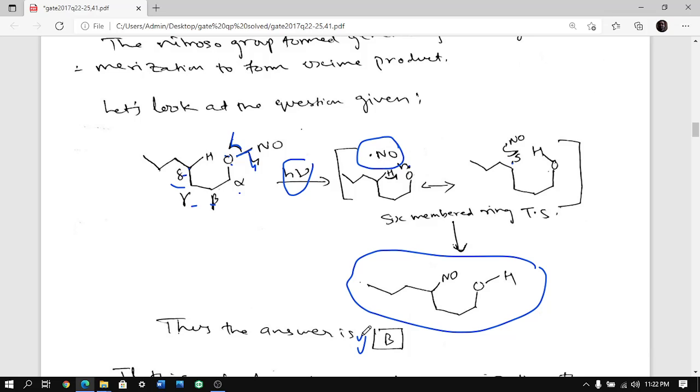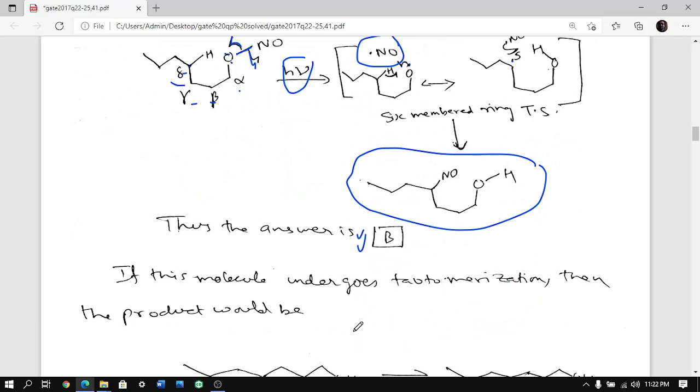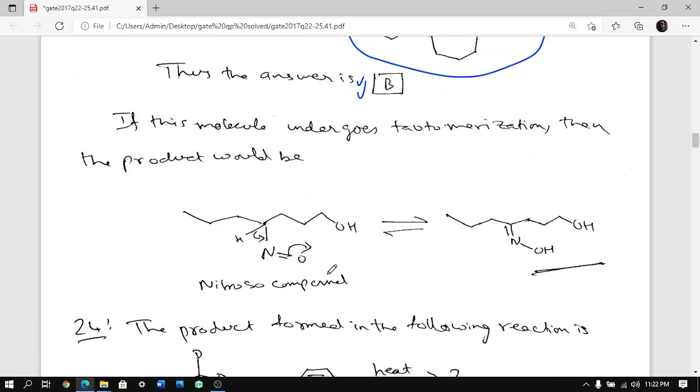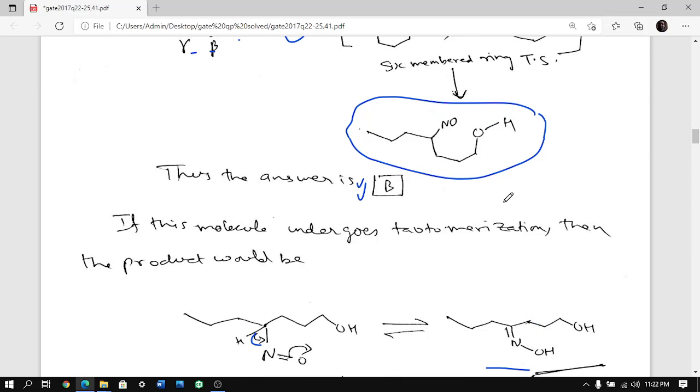But generally if you just get NO what's the point? So lots of things you can do after that. Generally it undergoes tautomerization, this comes here and you get oxime. And after oxime you can hydrolyze it, you can make ketone. So many things can be done.